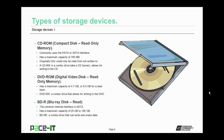Then we have the BDR, the Blu-ray disk read. Its common internal interface is the SATA interface, and it has a maximum capacity that ranges from 25 gigabytes to 128 gigabytes for a three-layer BDR. A BDRE is a combo drive that can write and erase data to the Blu-ray disk.